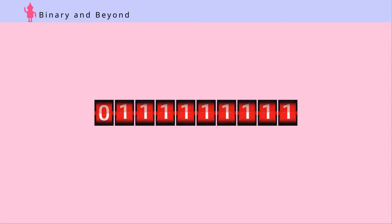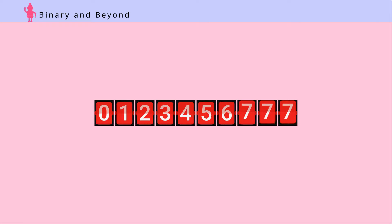Binary and beyond: 0, 1, 2, 3, 4, 5, 6, 7, 8, and 9 — the 10 digits are used to count and calculate numbers in our world. However, there exists a world where the number system only uses two digits.